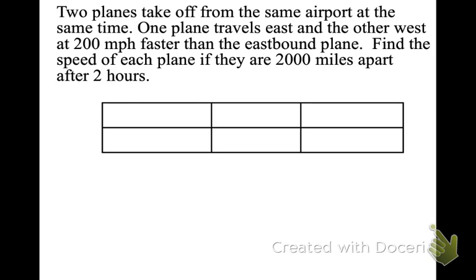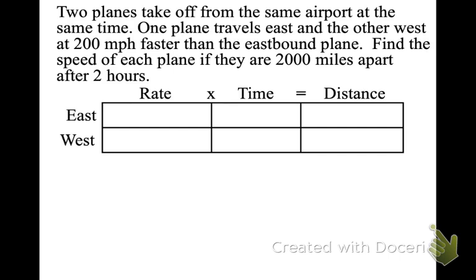In our table, what you're comparing always goes on the left. In this problem, two planes take off from the same airport at the same time. One travels east, the other west. West is 200 mph faster than east. Find the speed of each plane if they are 2,000 miles apart. So I'm comparing east and west on the left, and the top row is our formula: rate times time equals distance — we are multiplying across.